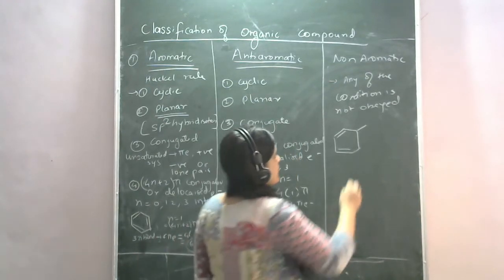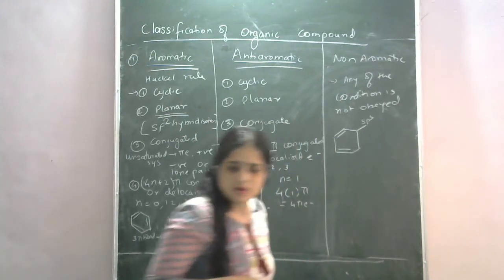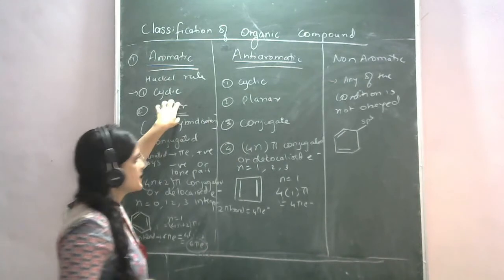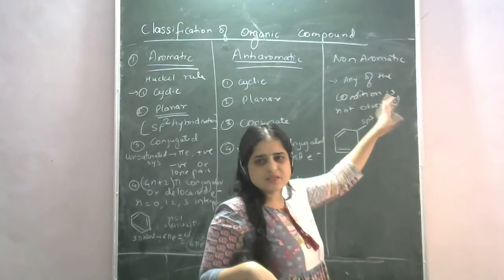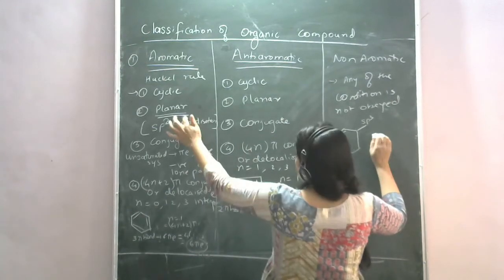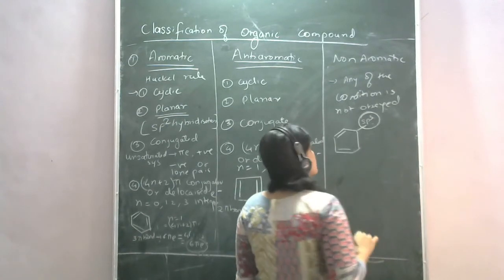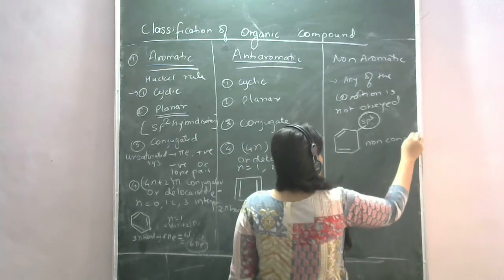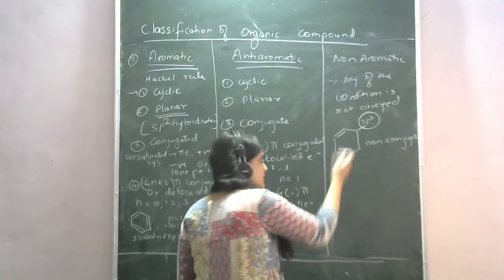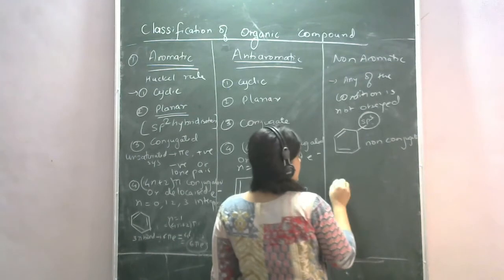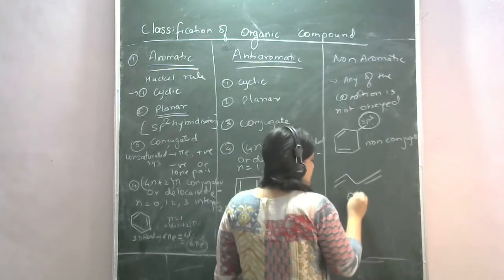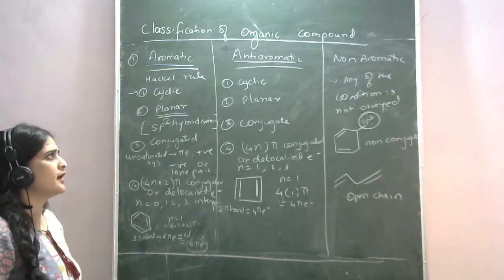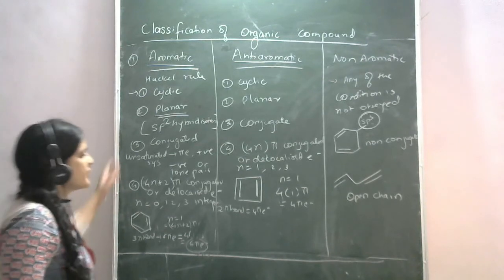For example, if the carbon is sp3 hybridized, it is non-planar — and we need sp2 hybridized carbon. Because it has sp3 hybridization, it is non-planar and non-conjugated, so we can reject it as non-aromatic. Another example: if it is an open chain structure, it is not cyclic — and a non-cyclic compound is a non-aromatic compound.